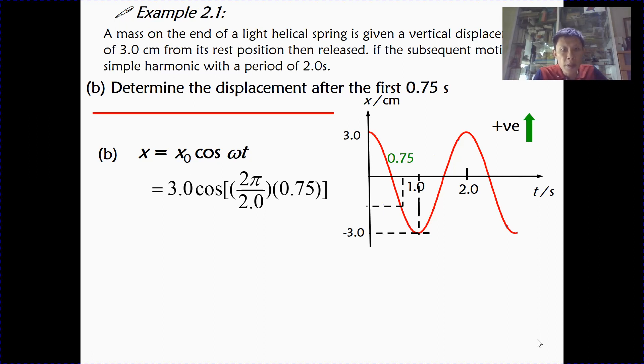Now at this point of time, it will be good if you can use your calculator to try to work out what would be the value. There's a possibility of getting two values. The first is 2.99 cm, which is close to 3 cm, or minus 2.12 cm. One of these is correct, the other one is wrong. More importantly, how do we ensure that we do not get the wrong one?